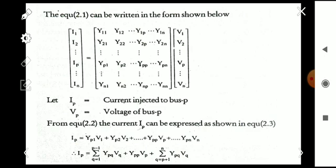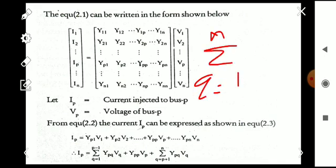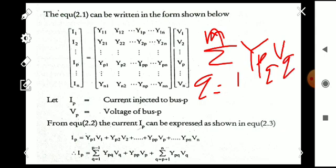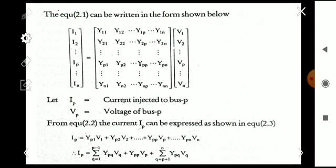We can also write Ip as sigma (q=1 to n) of Ypq·Vq. However, we consider the Ypp·Vp term independently for analysis purposes. We will be discussing two different methods of analysis, and for that purpose we split the entire equation into three parts: q=1 to p−1, then Ypp·Vp, then q=p+1 to n.